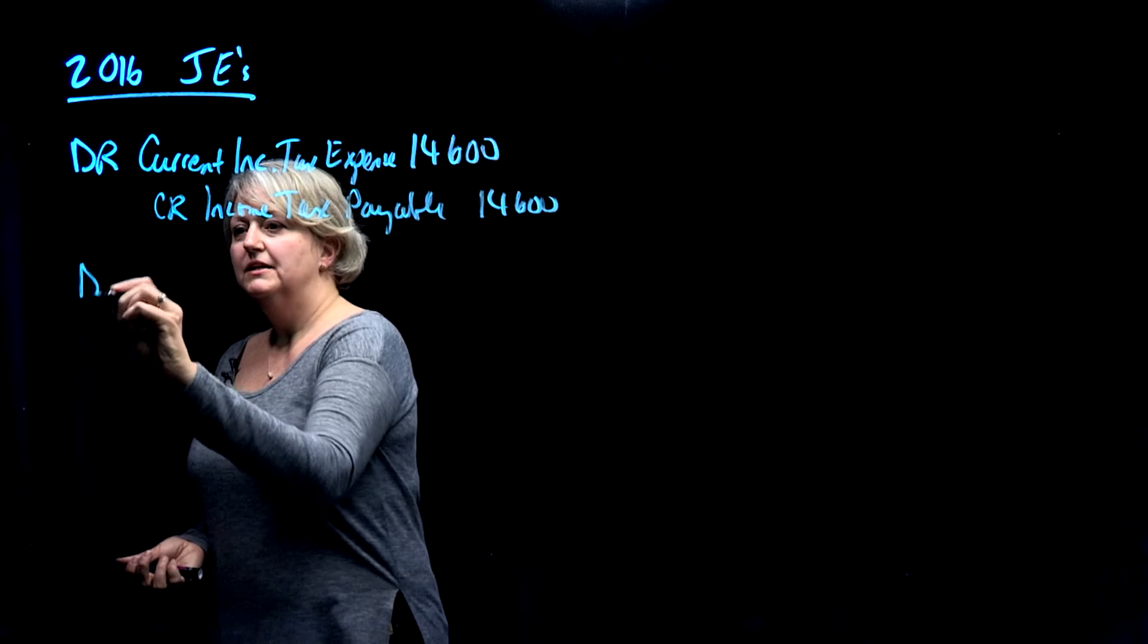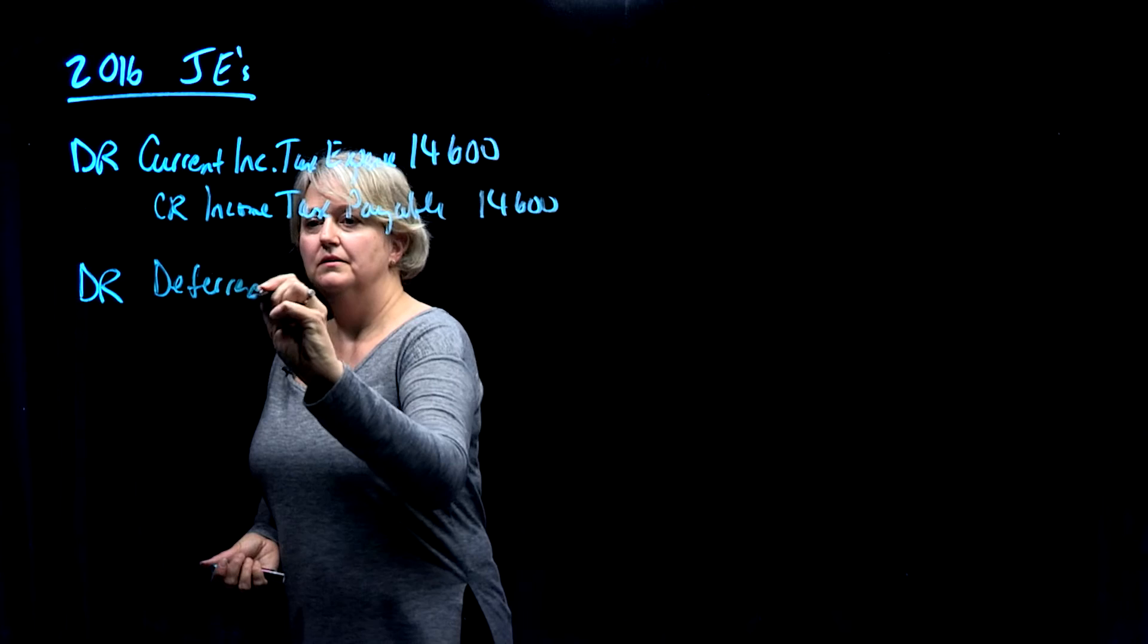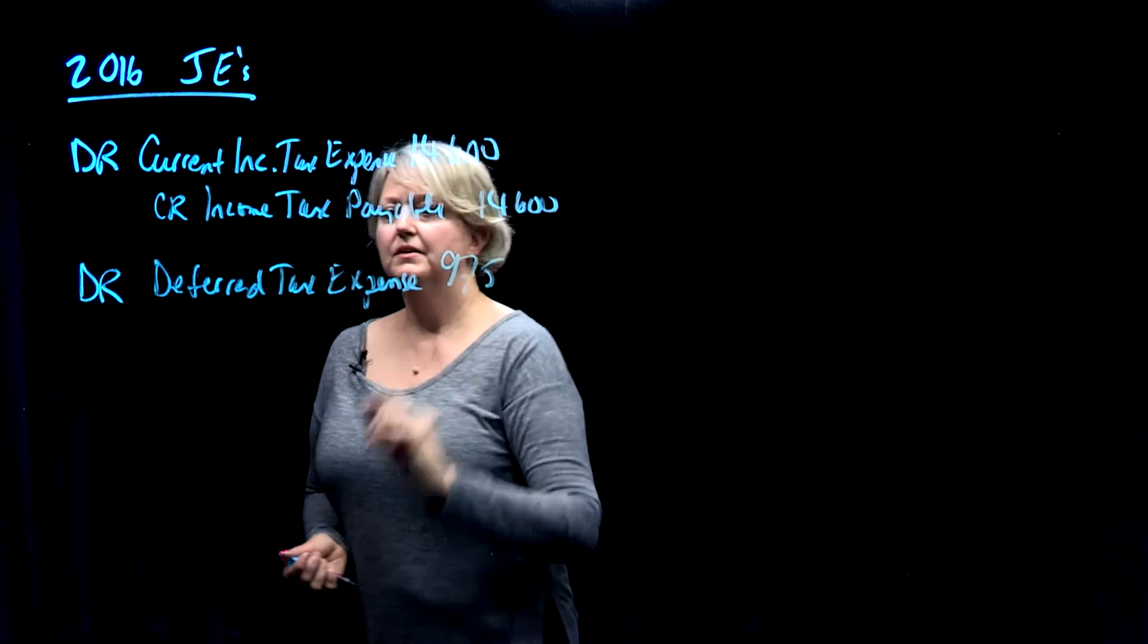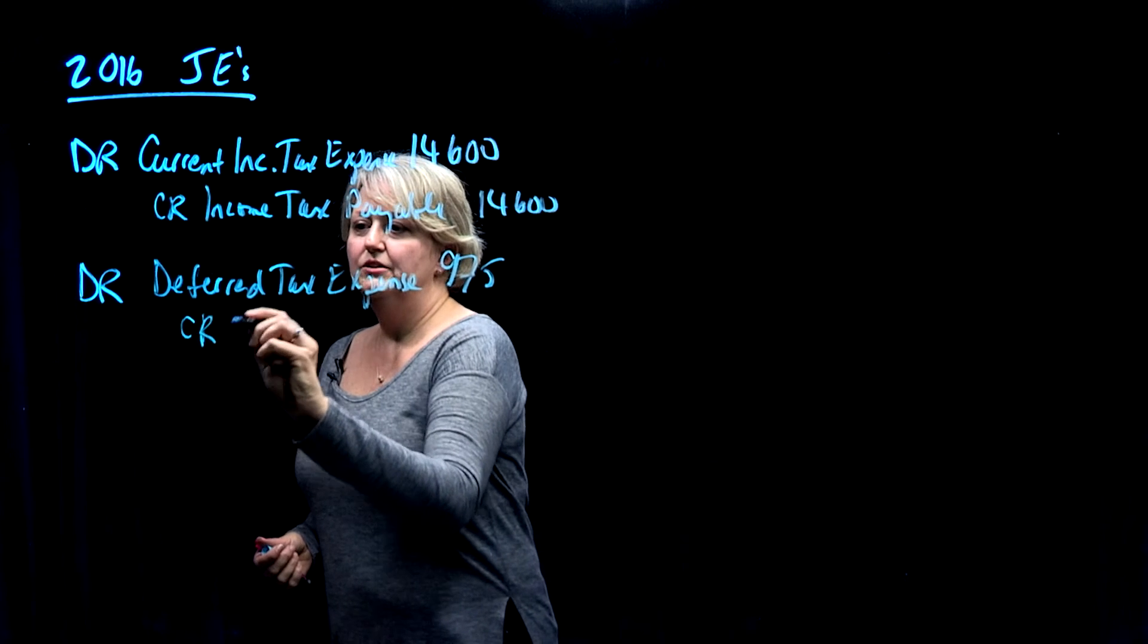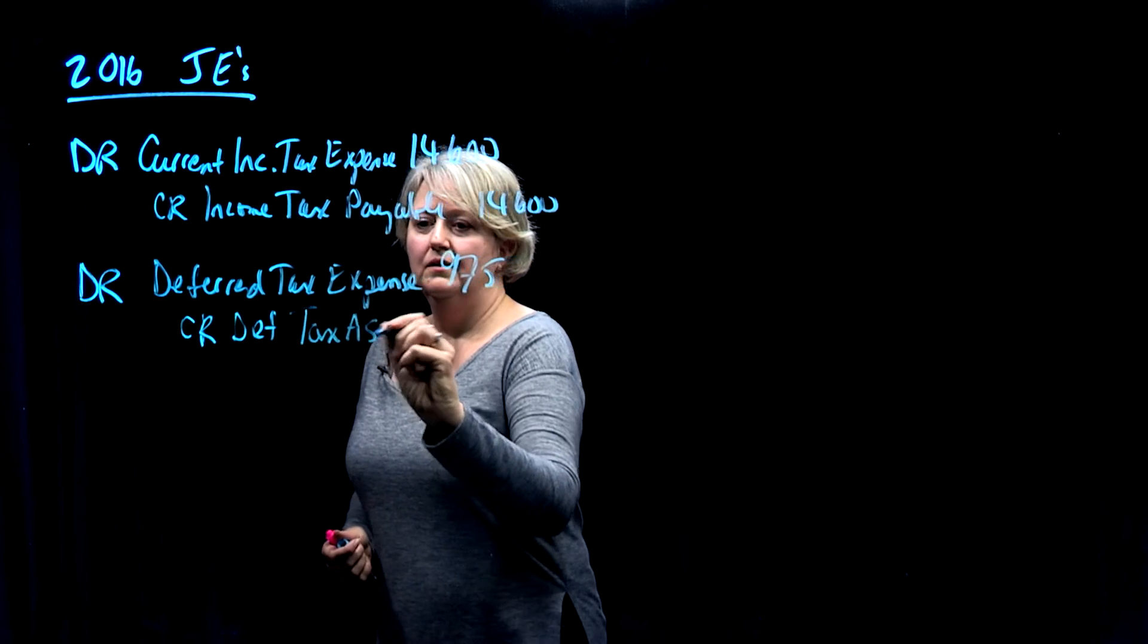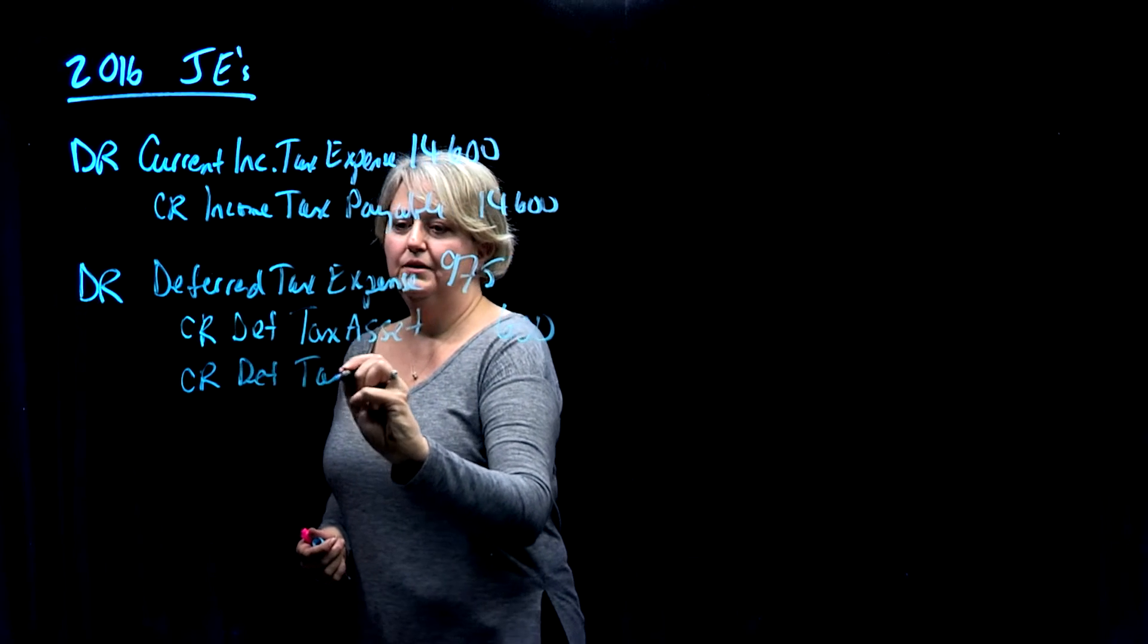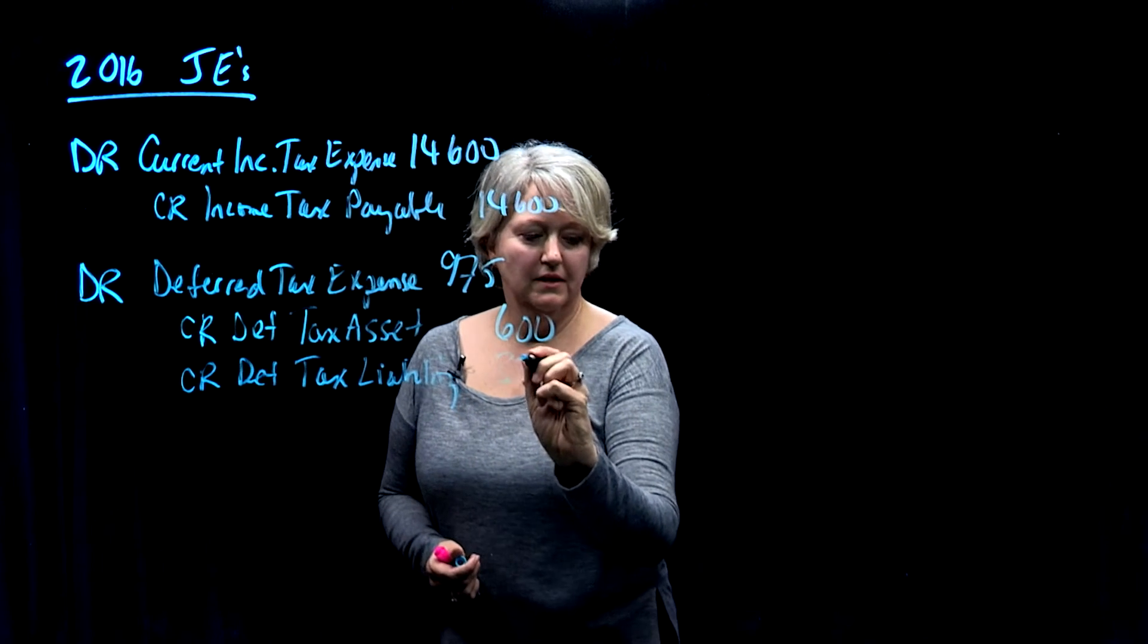From the step two calculation, the deferred tax calculation, we had a deferred tax expense that had to be recorded of $975. The other side of that entry is we're going to get rid of the deferred tax asset that we had of $600 and set up the deferred tax liability that we need of $375.